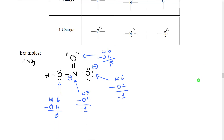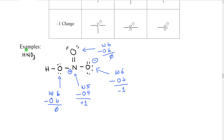Let's do an example of calculating formal charges. This is the Lewis structure of HNO3 — those marks are lone pairs on the fully correct Lewis structure. We can see that hydrogen has one bond. A hydrogen with one bond will always have zero formal charge, because the hydrogen atom wants one electron and one bond gives it one electron. So you can almost always ignore hydrogens that are covalently bonded in a molecule, but we have to check all the rest.